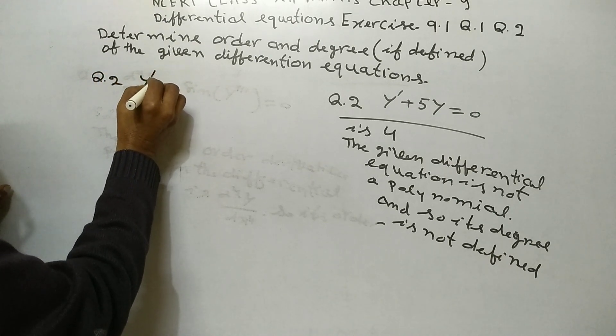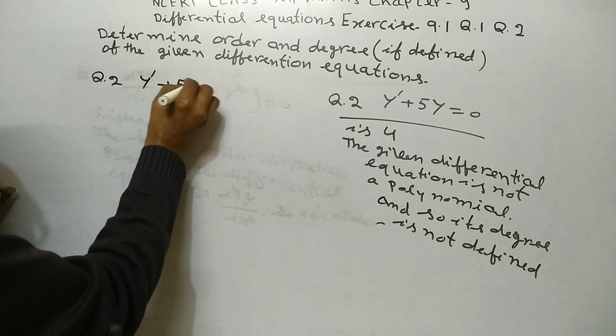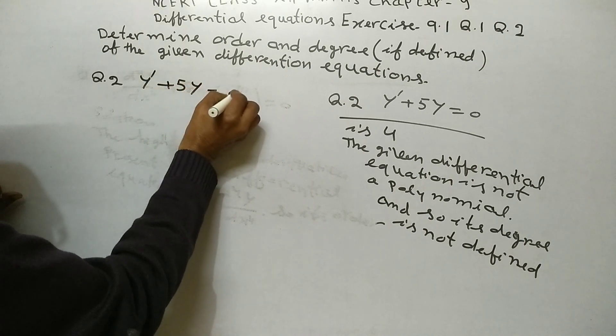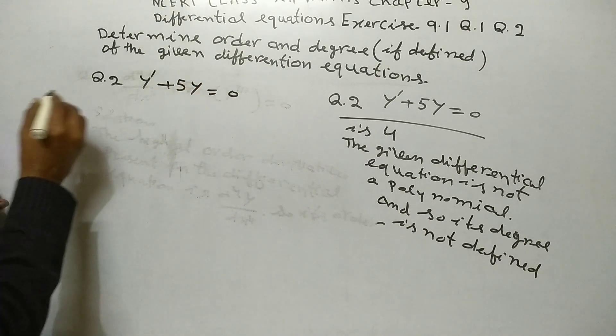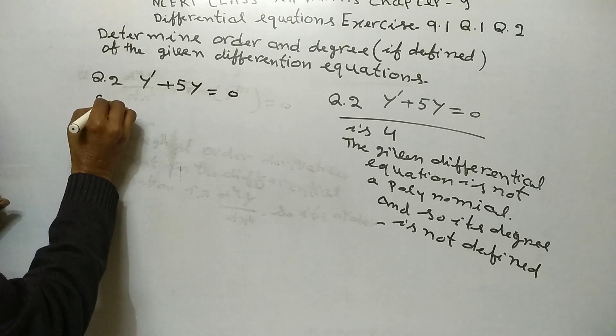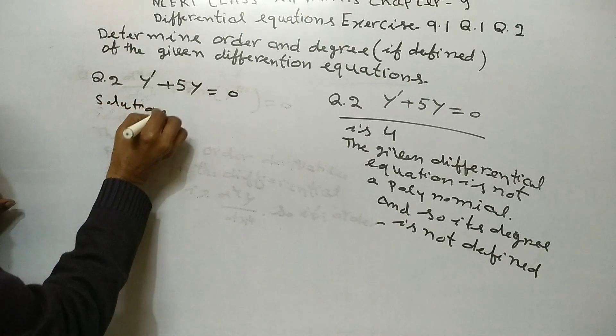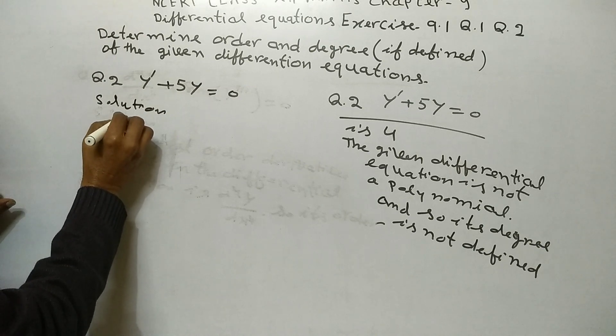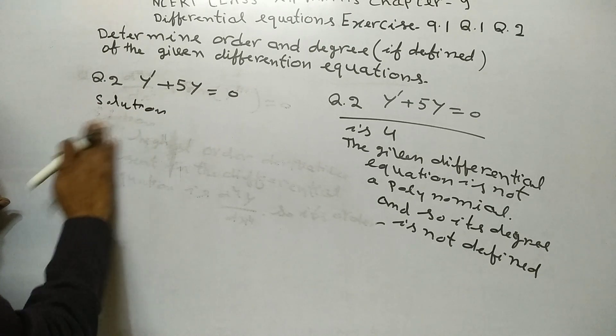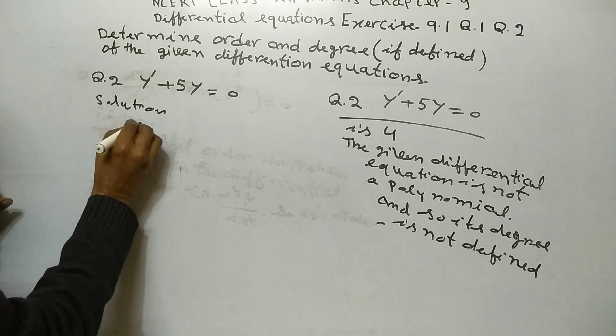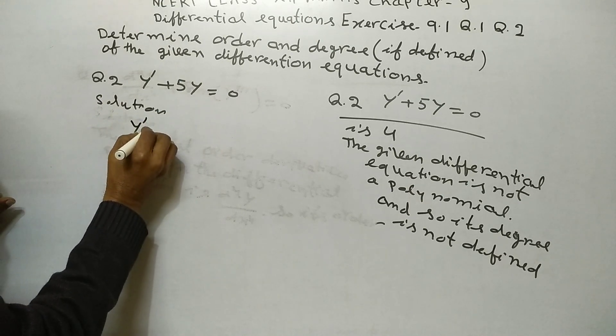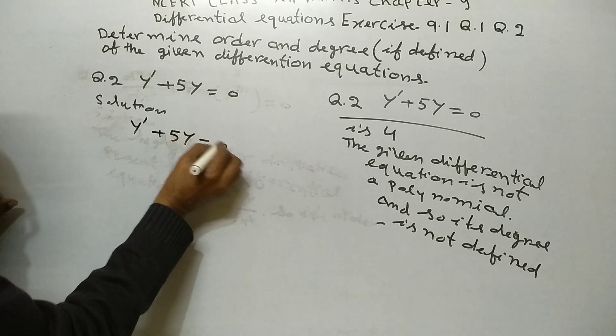dy upon dx plus 5y equal to 0. Now solution. dy upon dx plus 5y equal to 0.